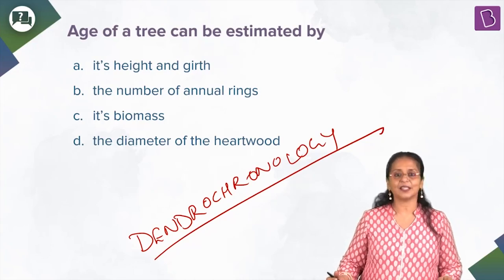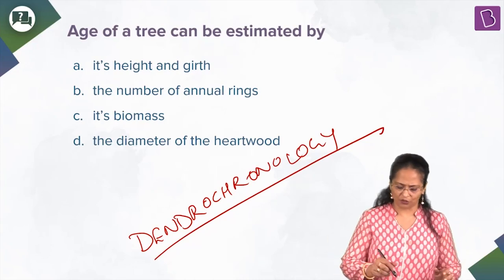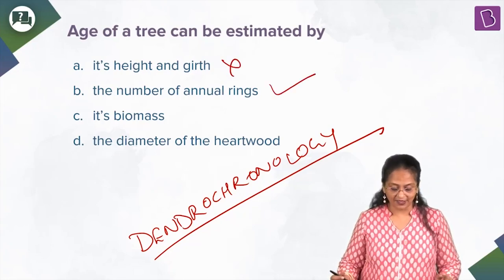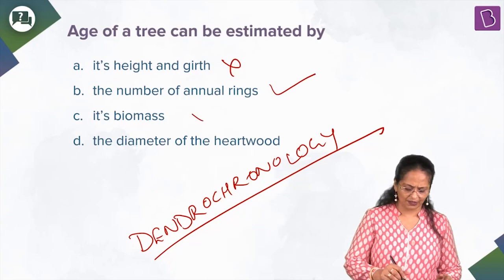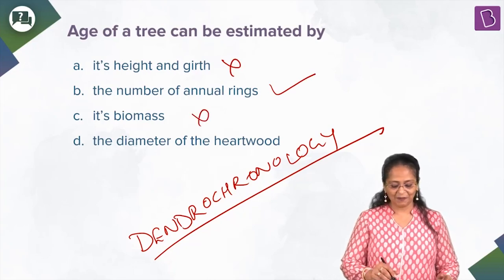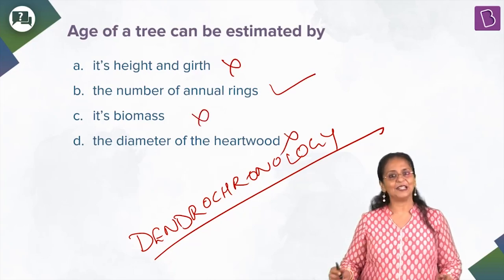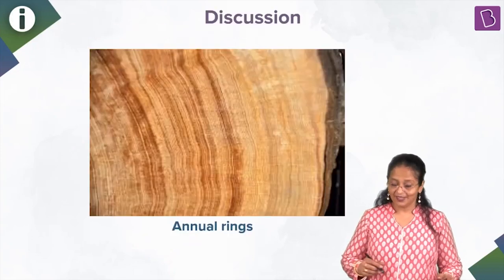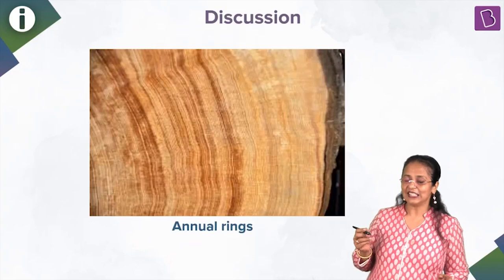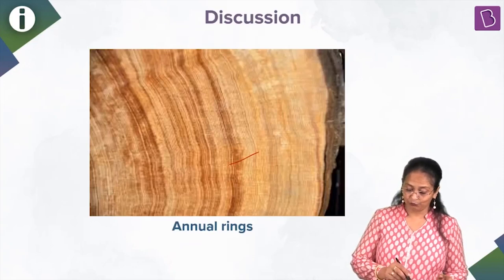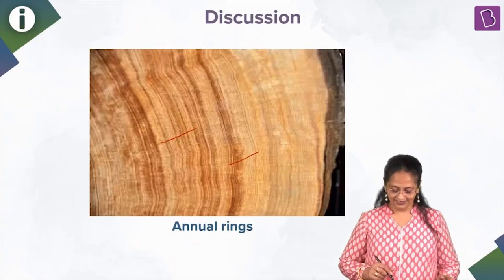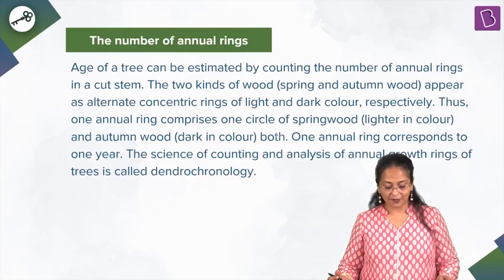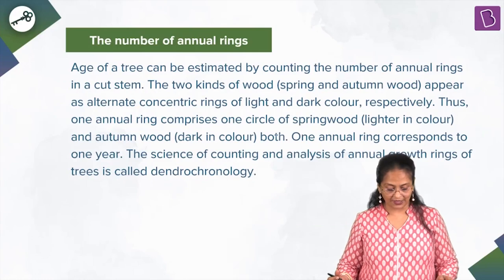Now let's come back to the options. The age of a tree can be estimated by: its height and girth — no; the number of annual rings — yes, that is the right answer; its biomass — no, definitely not; or the diameter of the heartwood — definitely not. The heartwood is the dark wood found in a tree. Can you see these rings, these beautiful lines? That's the annual rings.